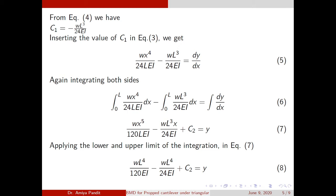Integrating both sides from 0 to L: the integral of wx⁴/(24L·EI) dx minus the integral of wL³/(24EI) dx, and the right-hand side dy/dx integrates to y. Now x⁴ integrates to x⁵/5, so 24×5 = 120 in the denominator with L·E·I. The term wL³/(24EI) is a constant, so its integral gives x plus c₂ equal to y. Applying the upper limit x = L, I get wL⁵/(120L·EI) — where L cancels — giving wL⁴/(120EI) − wL⁴/(24EI) + c₂ = y.